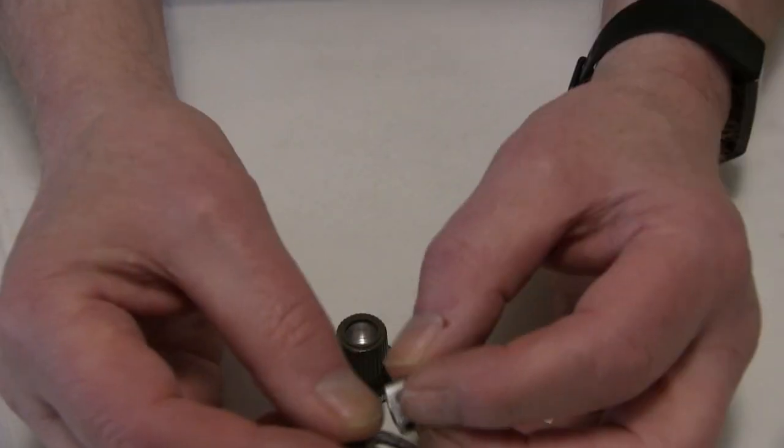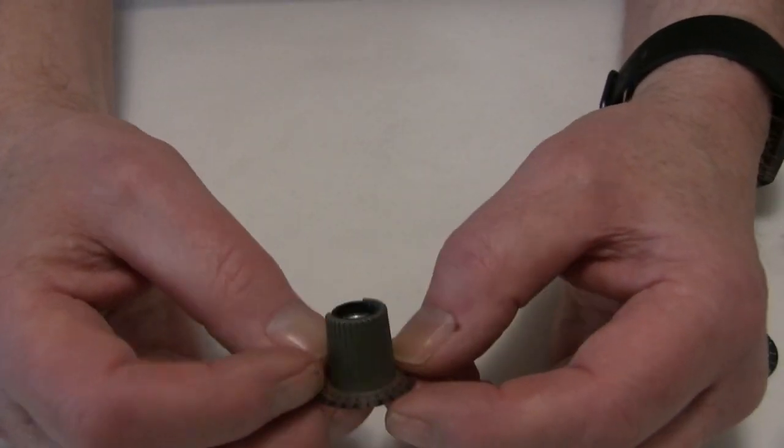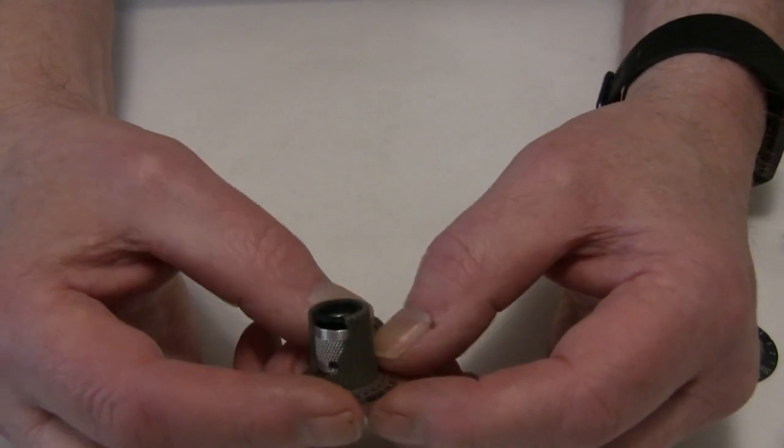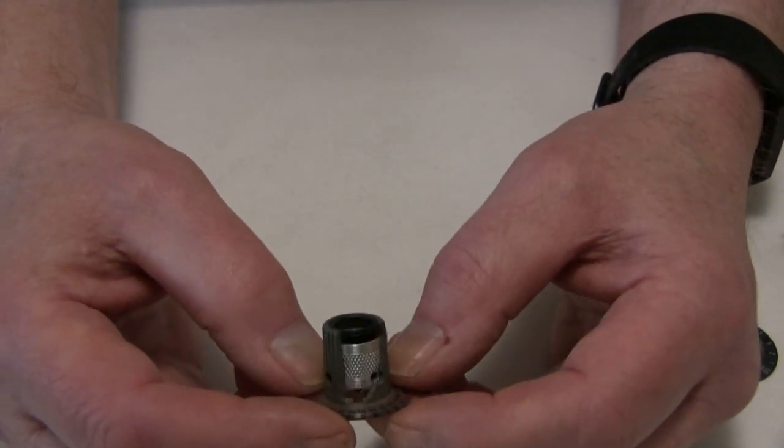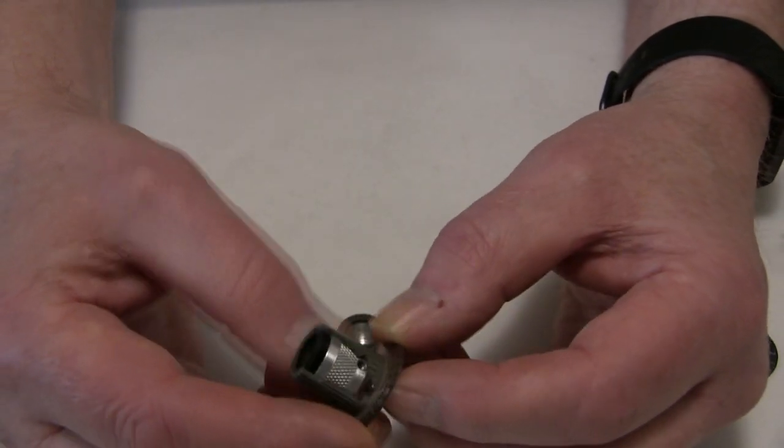The problem with Tektronix knobs is that they're molded plastic around an aluminum insert and over time the plastic shrinks and cracks and falls off the aluminum insert.